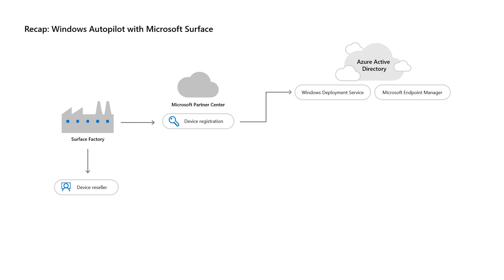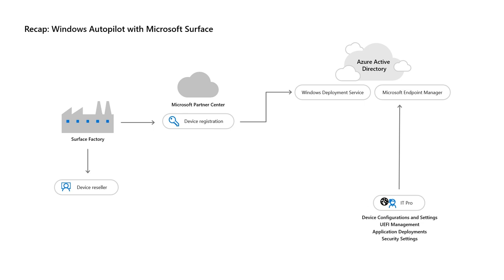Once a device is registered, a disabled Azure Active Directory object is created. This device registration then allows an IT admin to create the Autopilot configuration for that device, and configure security and other device settings and policies, application deployments for M365 apps, and any needed line of business applications. They can even create software update policies to keep the device up-to-date and compliant. With Surface devices, we can even configure firmware management and control settings like the ability to boot the device from a USB stick. In addition to device configurations, admins can also configure things like conditional access policies and advanced security protections for identity and even data protections for this device.